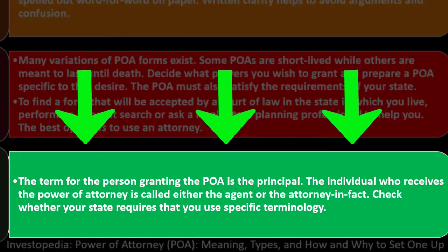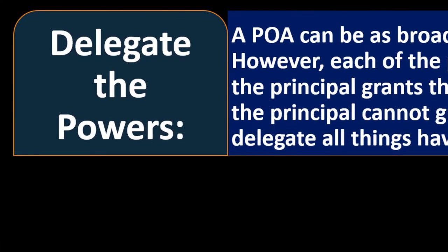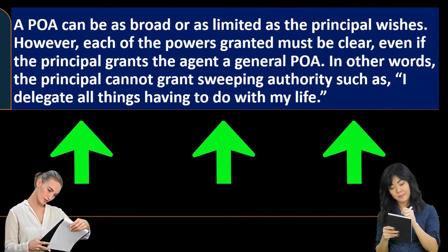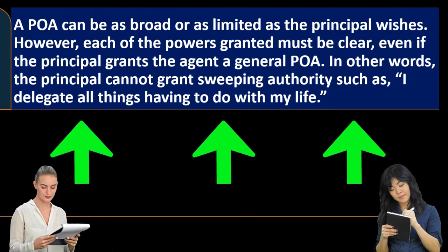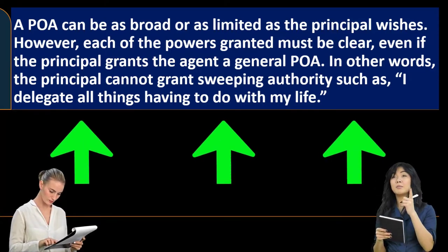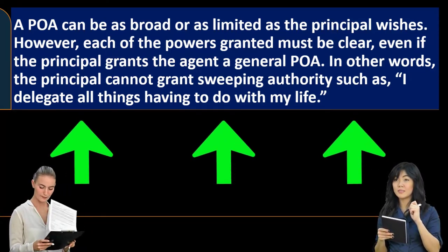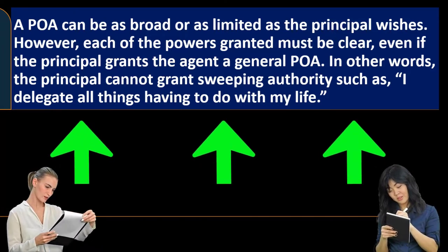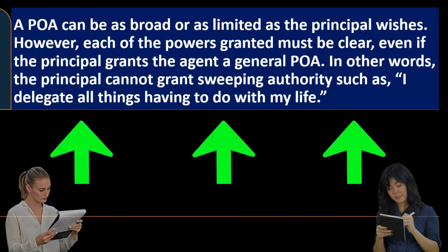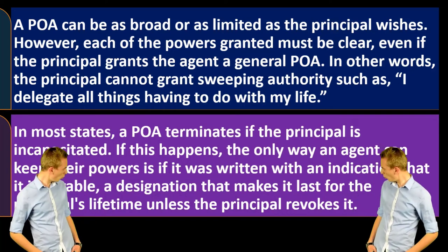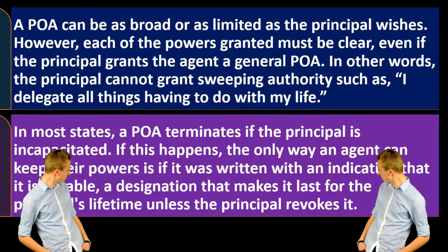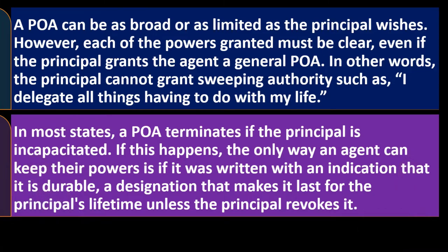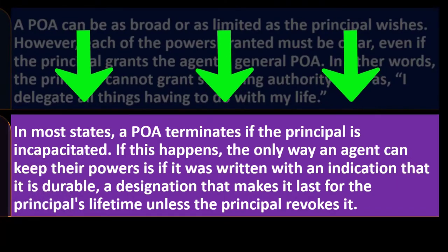Identify the parties: the person granting the POA is the principal; the individual who receives it is called the agent or attorney-in-fact. Check whether your state requires specific terminology. A POA can be as broad or as limited as the principal wishes; however, each of the powers granted must be clear. Even with a general POA, the principal cannot grant sweeping, vague authorities — the scope should be specific.